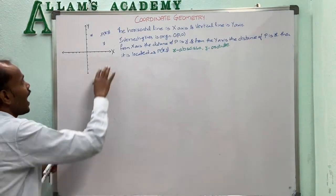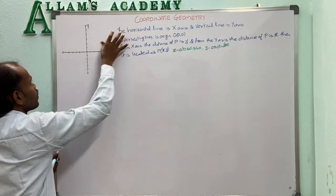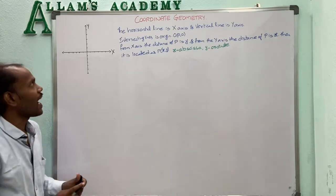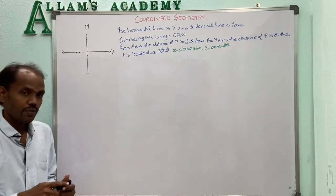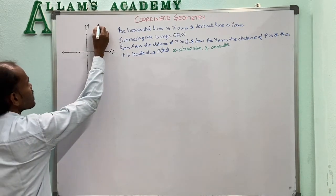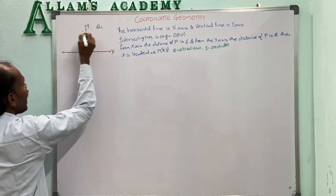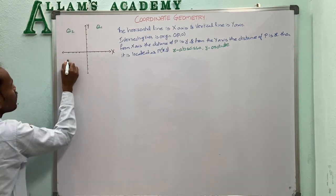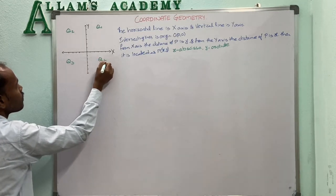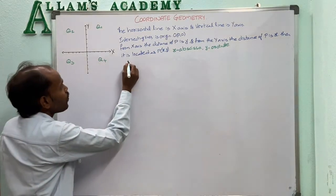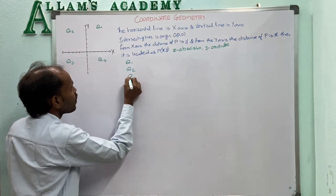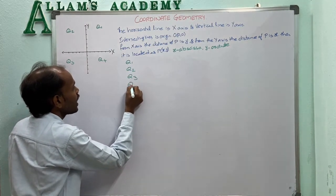When both the x and y axes are taken together, the plane is divided into four parts. These four parts are called four quadrants, denoted as Q1, Q2, Q3, and Q4.